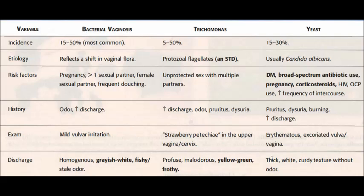The causes of vaginitis are variable: bacterial vaginosis, trichomonas, and yeast. The most common cause is bacterial vaginosis at 15 to 50 percent, trichomonas at 5 to 50 percent, and yeast at 15 to 30 percent. The etiology of bacterial vaginosis reflects a shift in vaginal flora, whereas trichomonas is a protozoan flagellate and an STD. Yeast is usually Candida albicans.